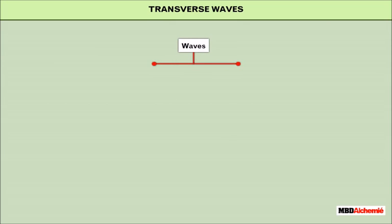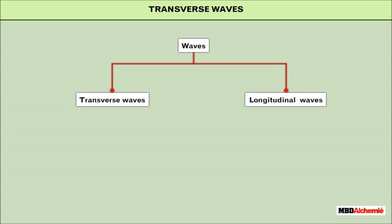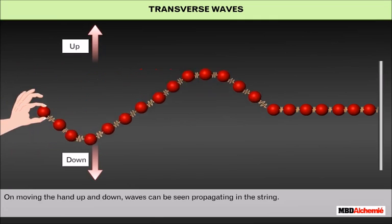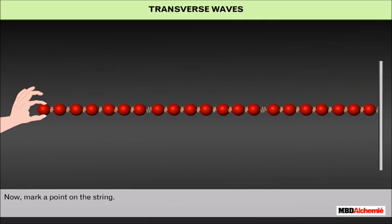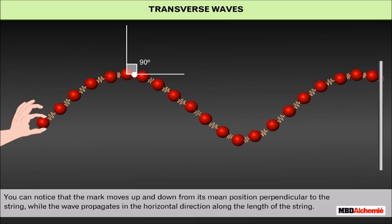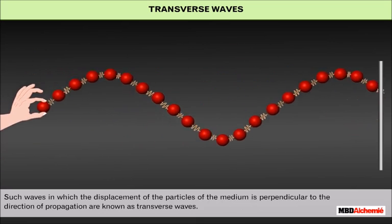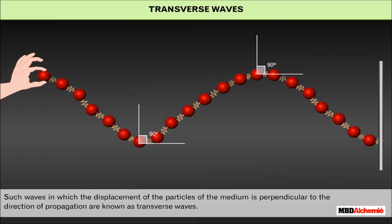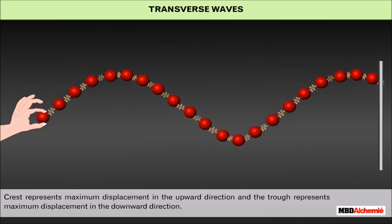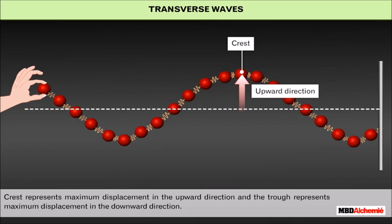Waves are of two types: transverse waves and longitudinal waves. Let us learn about transverse waves. Tie one end of a string with a rigid support and hold the other end with your hand. On moving the hand up and down, waves can be seen propagating in the string. Now mark a point on the string. You can notice that the mark moves up and down from its mean position perpendicular to the string, while the wave propagates in the horizontal direction along the length of the string. Such waves in which the displacement of the particles of the medium is perpendicular to the direction of propagation are known as transverse waves. These waves move in the form of crest and trough. Crest represents maximum displacement in the upward direction and the trough represents maximum displacement in the downward direction.